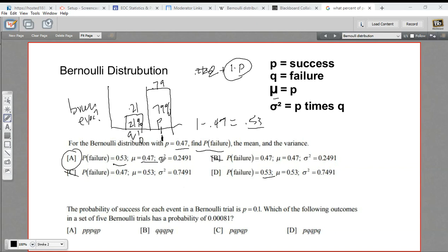But let's just go ahead and do that last bit of math. We want to find the variance. So I'm just going to grab my calculator here and punch in 0.47, the success rate, times 0.53, the failure rate. And I get 0.2491. And yes, that's exactly what it is here. So A is our correct answer there.